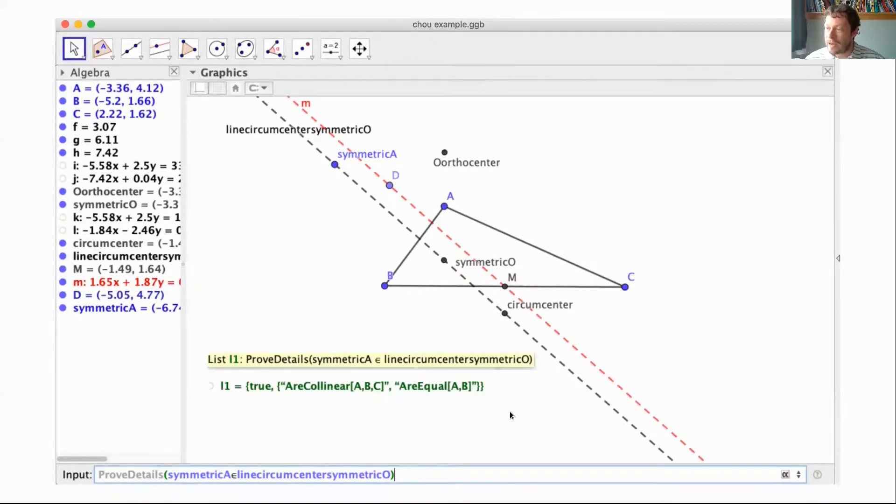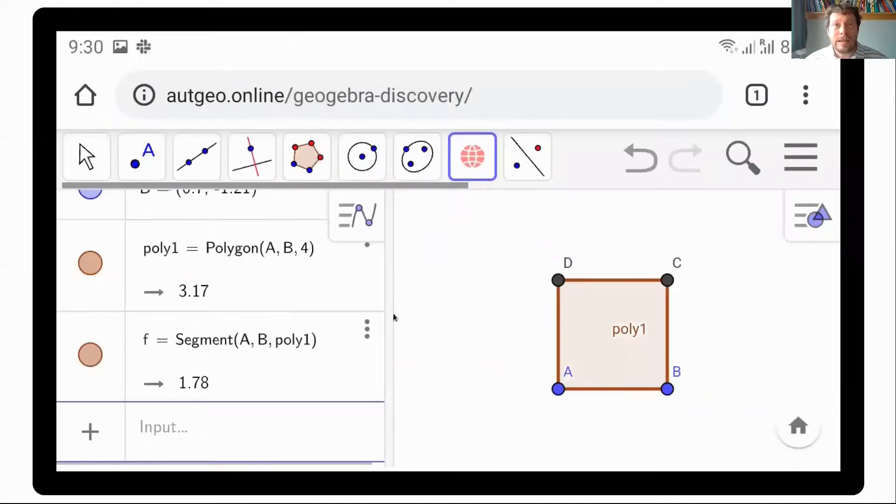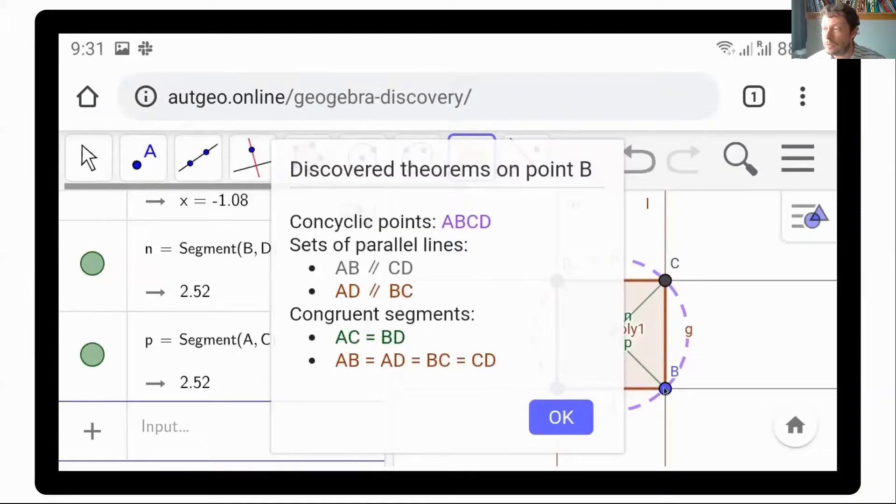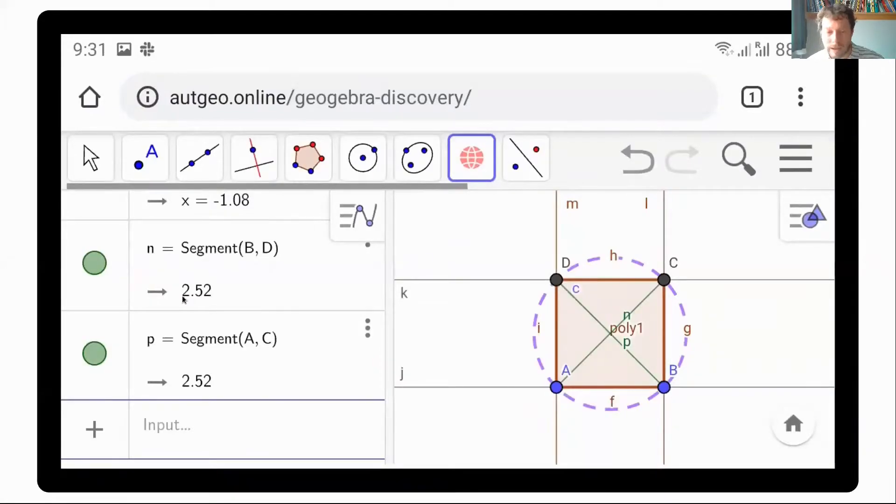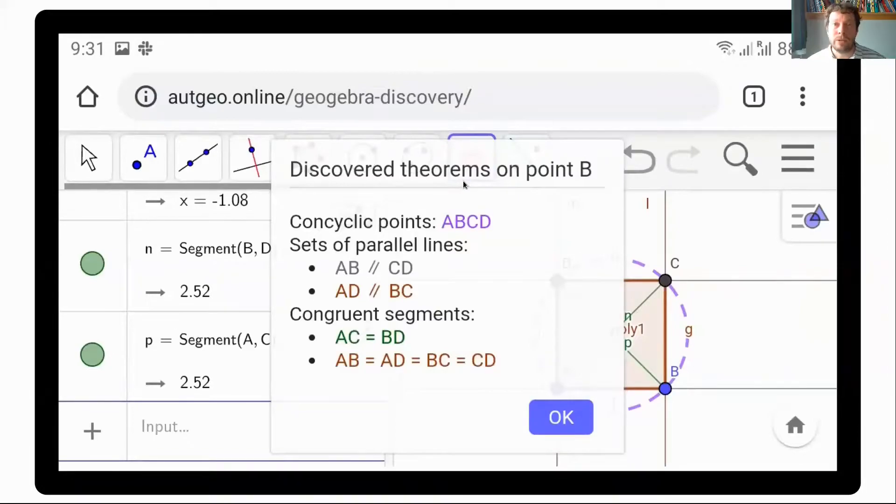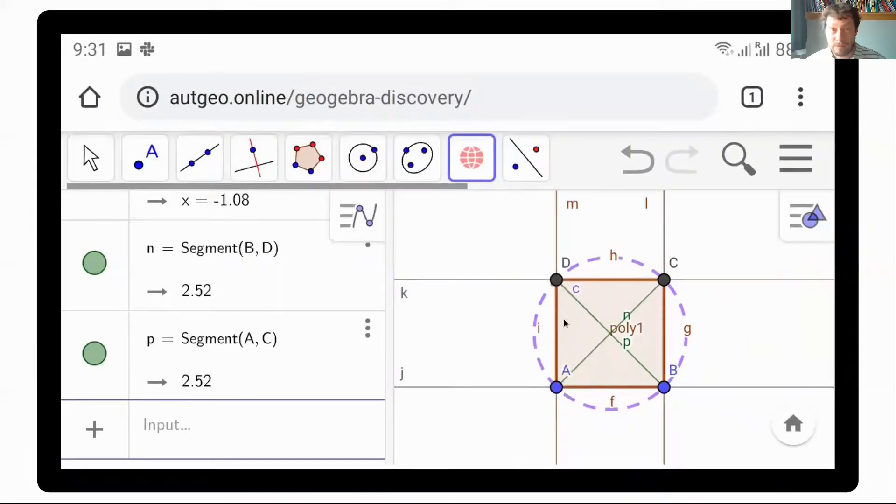This slide shows how GeoGebra reports the truth of the proven statement. Another example works on a smartphone. Not just one conjecture, but all theorems related to one point can be obtained using this tool. We make a square and then use this discover icon to obtain theorems about point B with visualization.